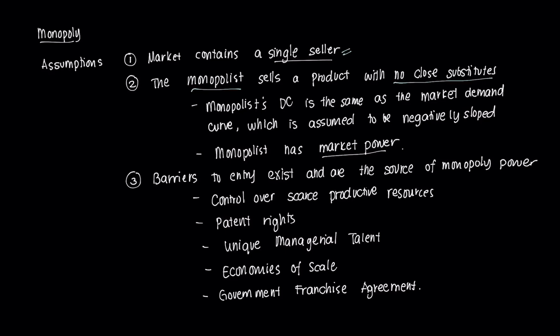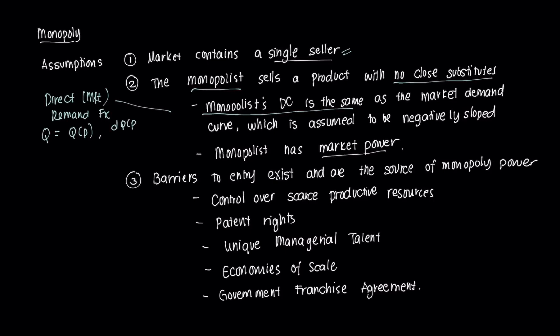There's really no close substitute for that service. Because the monopolist sells a product with no close substitute, the monopolist's demand curve is effectively the same as the market demand curve. We assume that market demand curve to be negatively sloped. We have a direct market demand function, which is essentially Q as some function of P. We assume that it's negatively sloped, so if we take the derivative of quantity with respect to price, this should be less than zero.